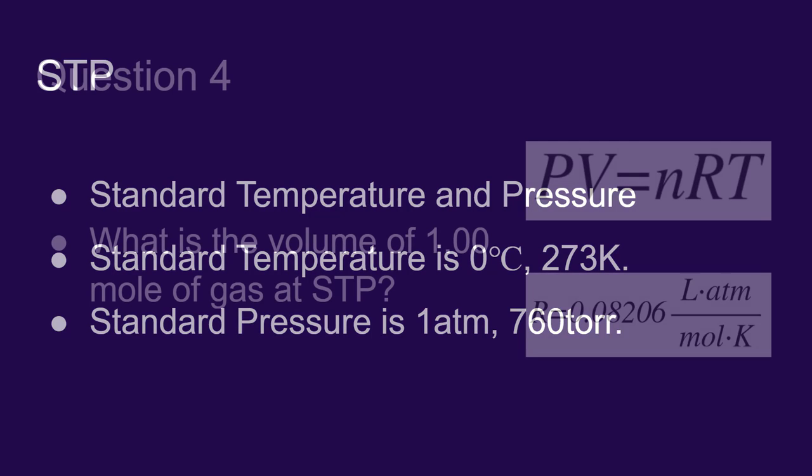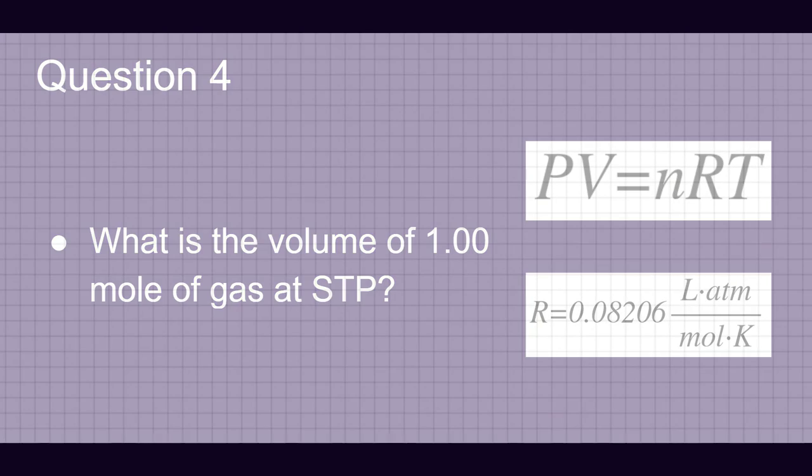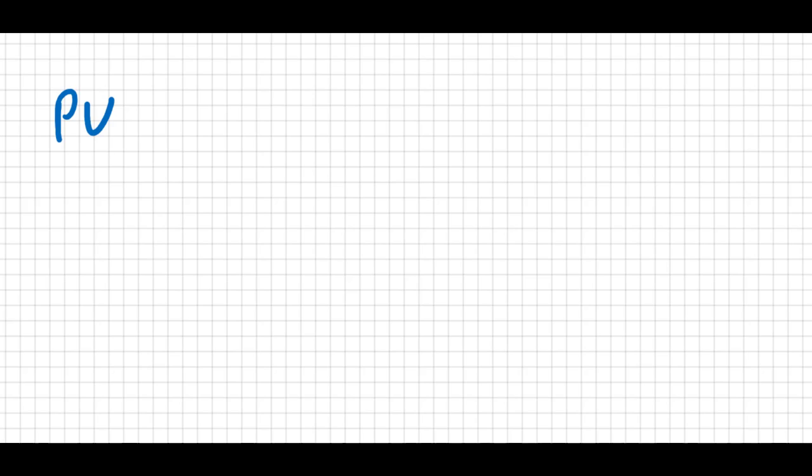Given that information, what's the volume of one mole of gas at STP? So using the ideal gas law, PV equals nRT, and we're going to look for the volume of gas. So volume is going to equal nRT over P, and we're told that we have one mole of gas. We're going to multiply it by the ideal gas constant.